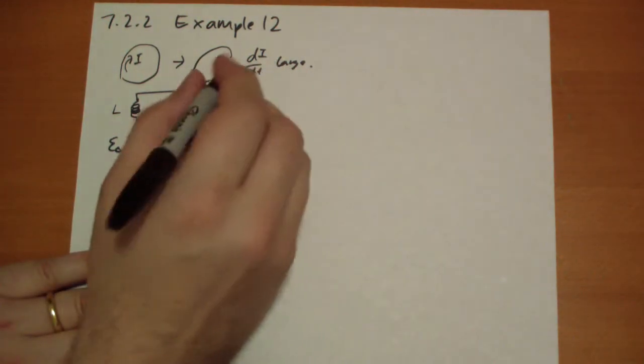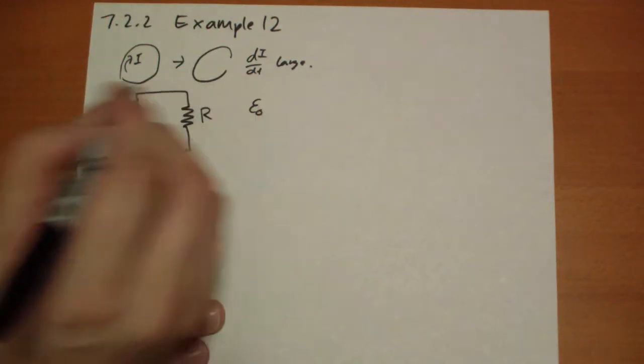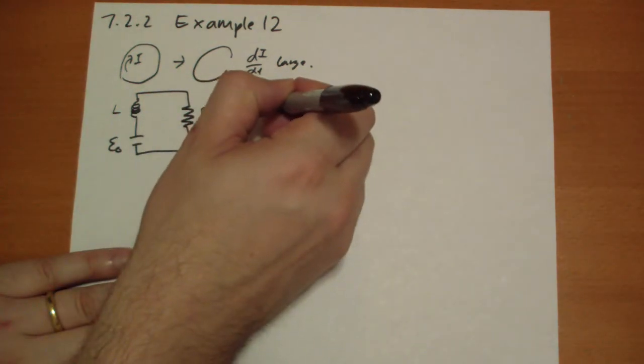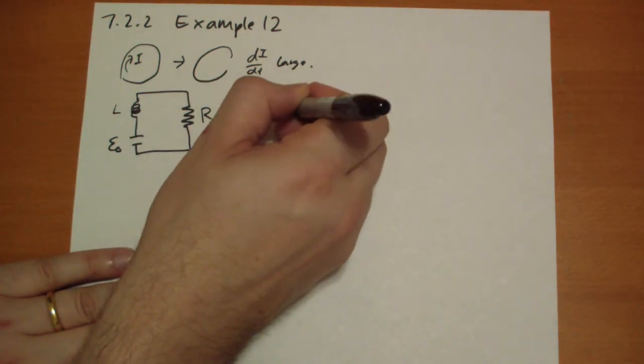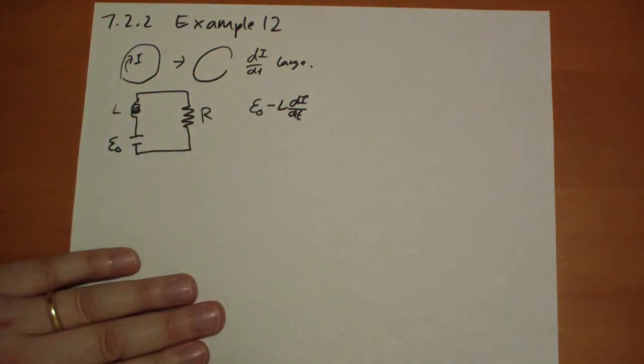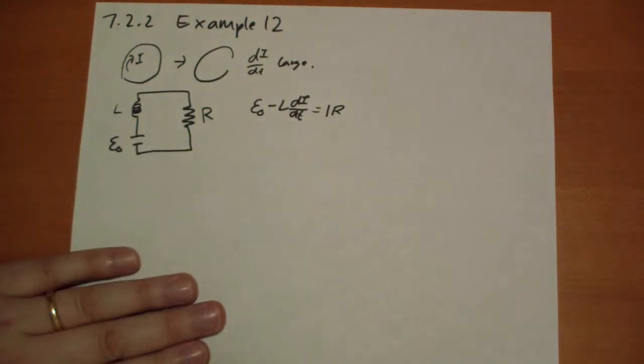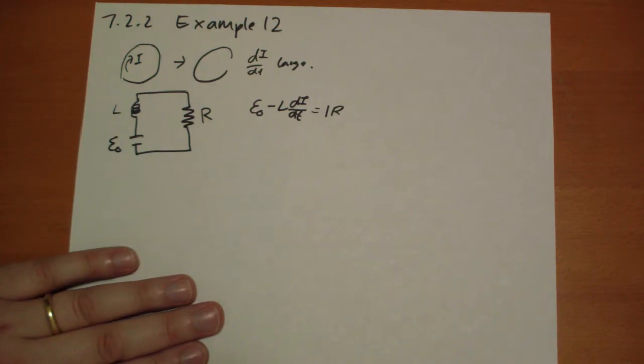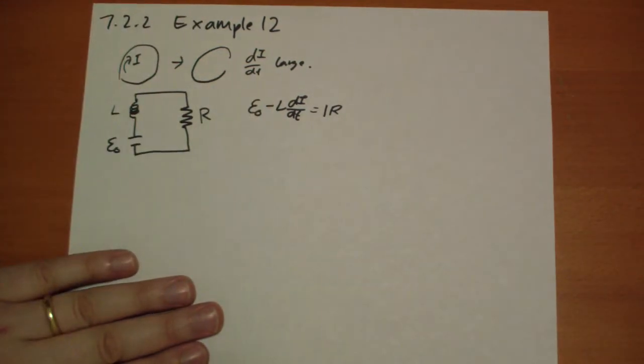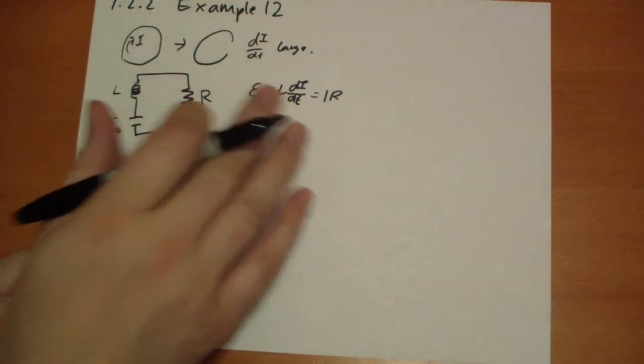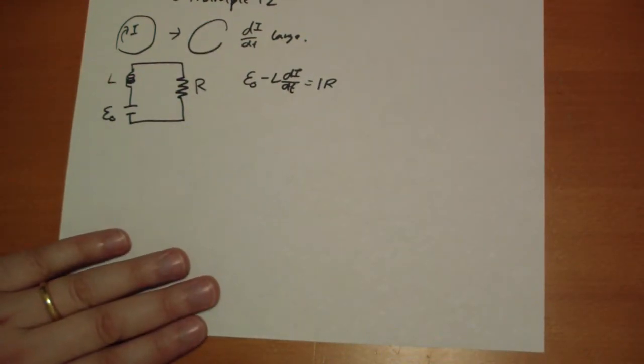So we can calculate the total EMF. That's the battery plus the inductor. Remember, it opposes changes to the current. And then that has to equal to the resistance IR. That's Ohm's law, translated for EMF. And you can solve for this differential equation rather easily.